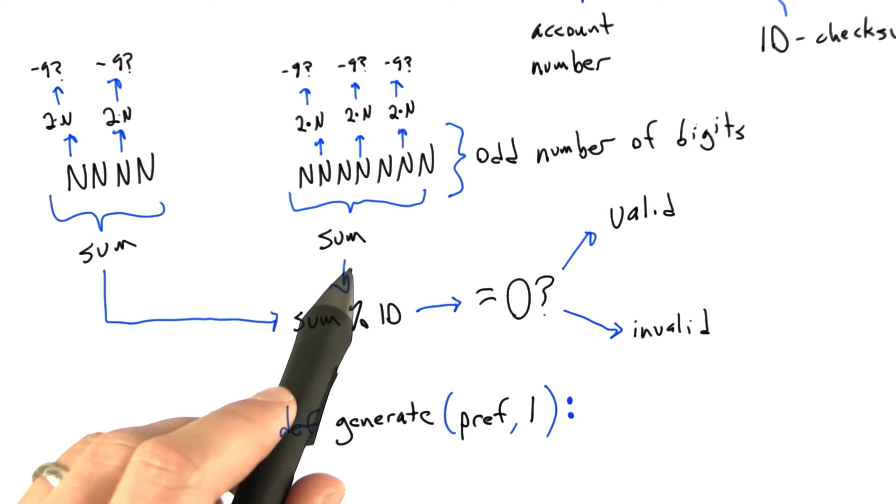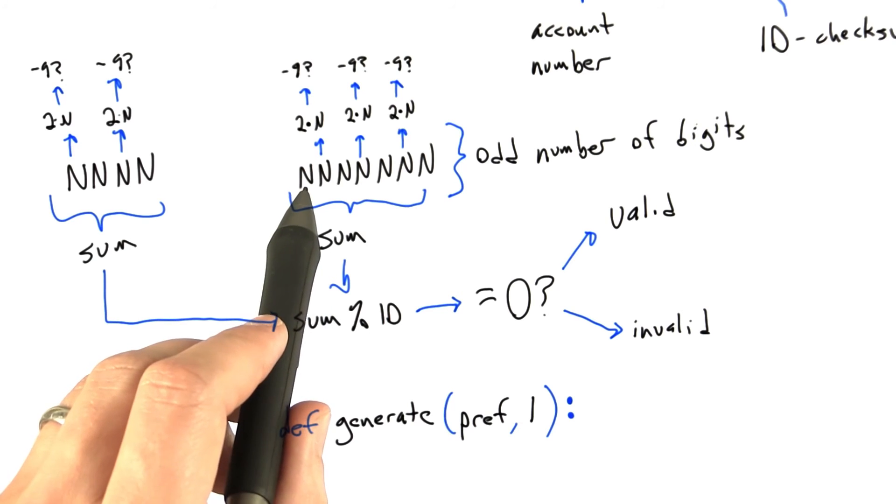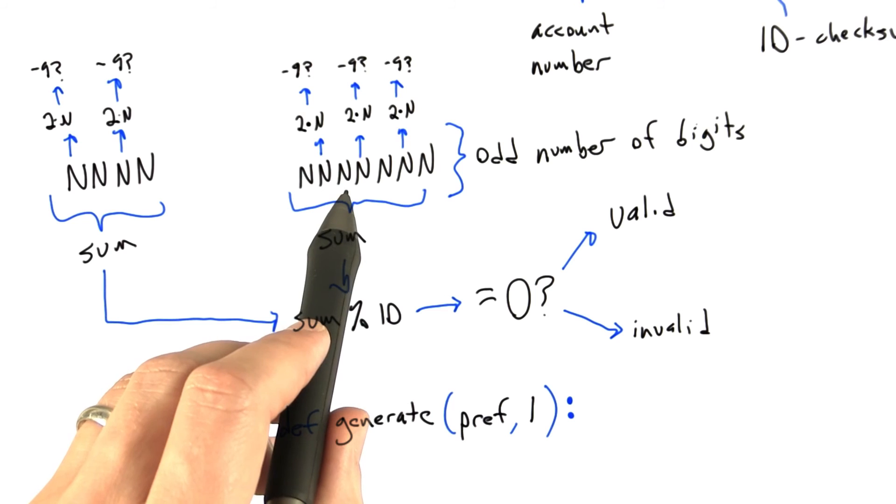In my discussion of Luhn's algorithm, I assumed digits were numbered starting at 1. For example, digit 1 is an odd-numbered digit, digit 2 is even-numbered, digit 3 is odd, and so on.